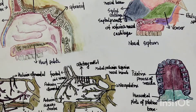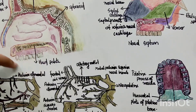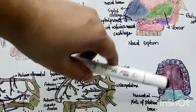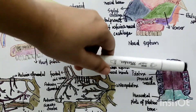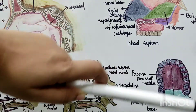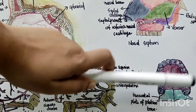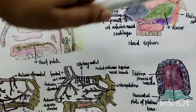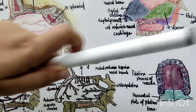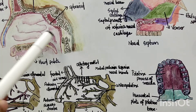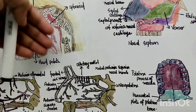The floor of the nasal cavity forms the roof of the oral cavity. It is formed by two bones: the horizontal plate of the palatine bone and the palatine process of the maxilla. These two bones form the floor of the nasal cavity, which is about five centimeters long and one and a half centimeters wide.